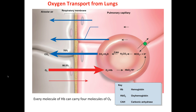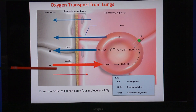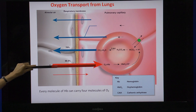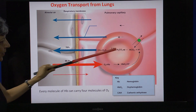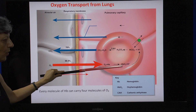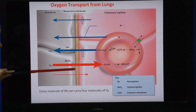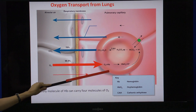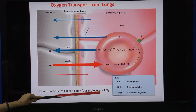Oxygen is going to load onto the blood from the lungs — from alveolar air, where there is a very high percentage of oxygen. Oxygen will diffuse across the respiratory membrane and go to the red blood cells, where it attaches to hemoglobin forming oxyhemoglobin. The main way oxygen is carried in the blood is on hemoglobin, and every hemoglobin molecule can carry four molecules of oxygen.